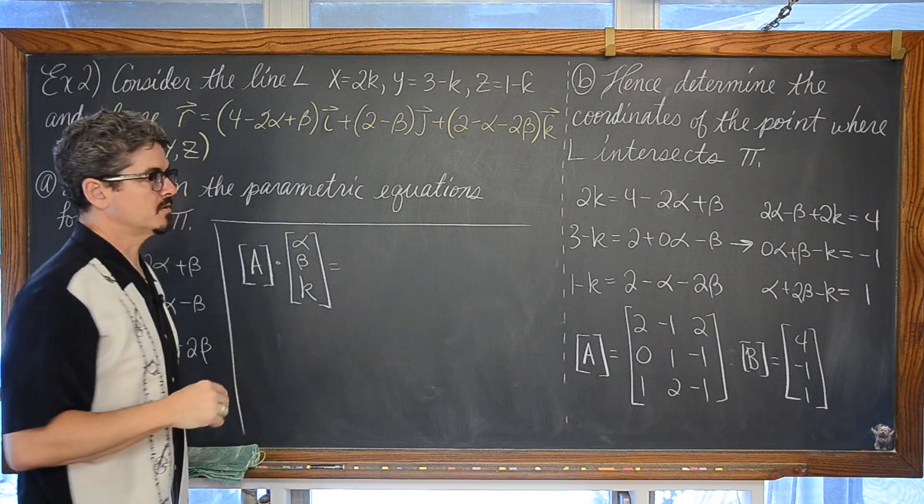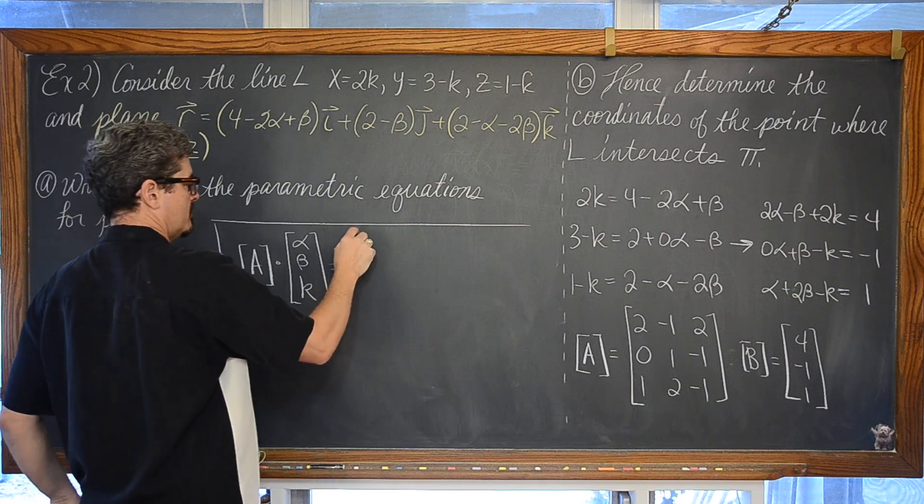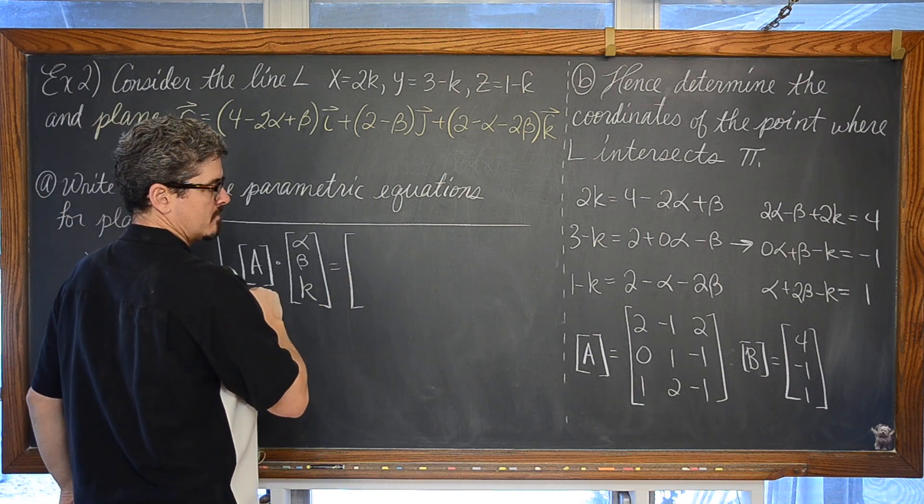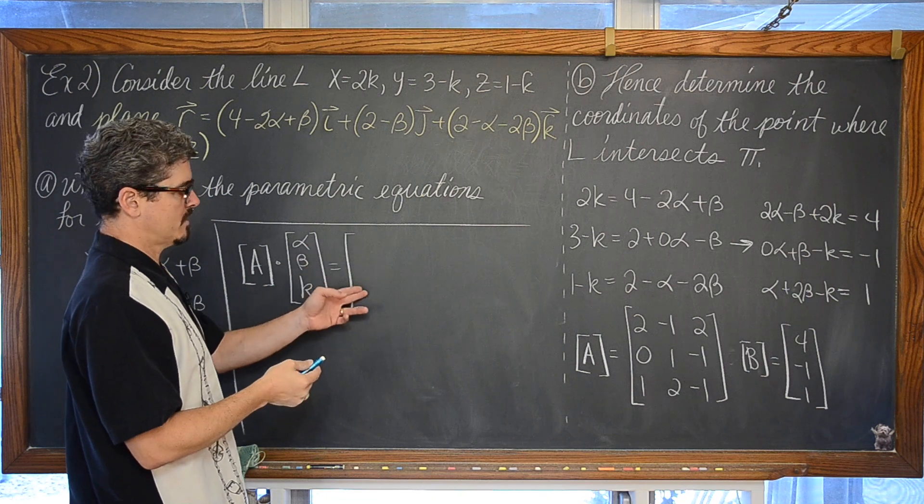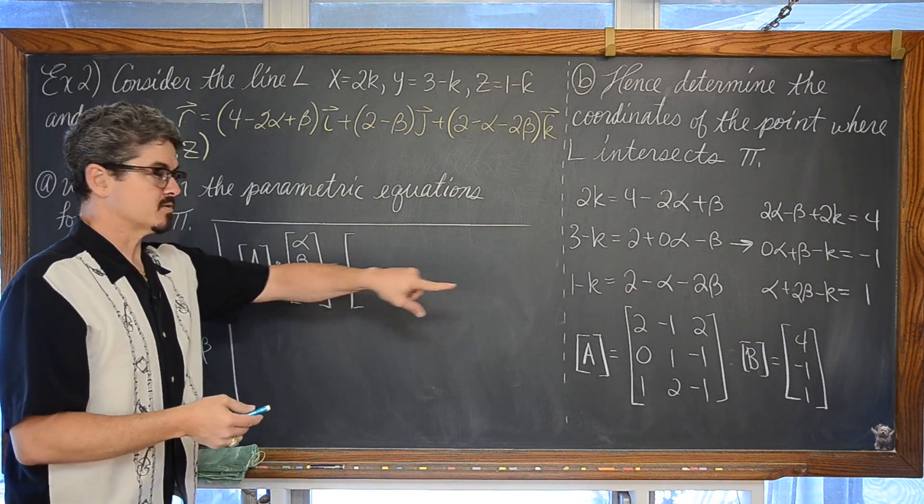And that is equal to our constant matrix. Well, I can write 4, negative 1, 1, but I am already using a variable here. So, I am going to say that this is equal to matrix B.